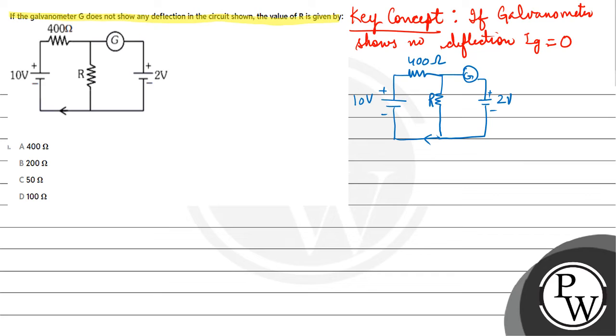Here you have potential difference plus 2 volt. Now it is connected to 10 volt, so here potential difference 10 volt. So we can say that potential difference across 400 ohm resistance is equal to 10 minus 2, that is 8 volt.